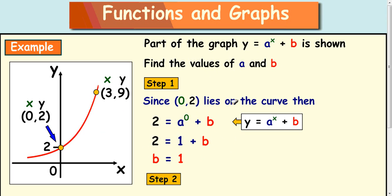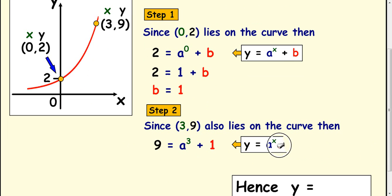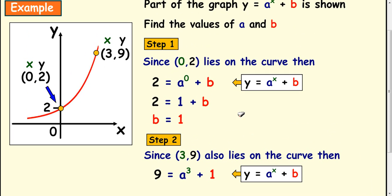Now that we've got b as 1, we can use the other coordinate. So we know that b is 1 here and then we can put 3 in as your x up here and 9 in as your y. I suppose it's easier to look at down here. So the 1 goes in as your b, 3 goes in as your x and 9 goes in as your y value from this coordinate here.